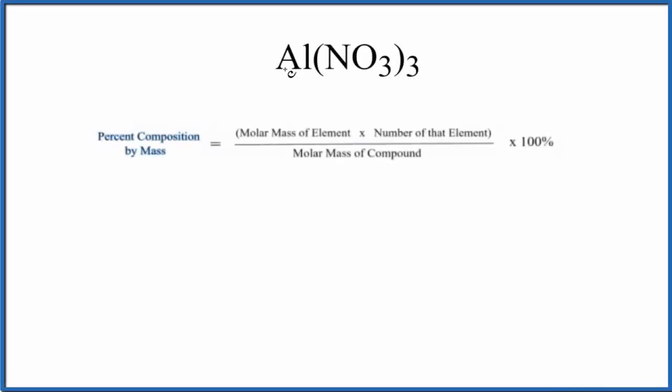In this video, we'll find the percent composition by mass for each element in Al(NO₃)₃. That's aluminum nitrate.